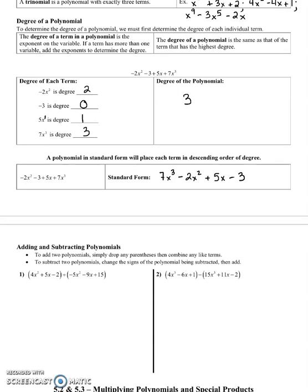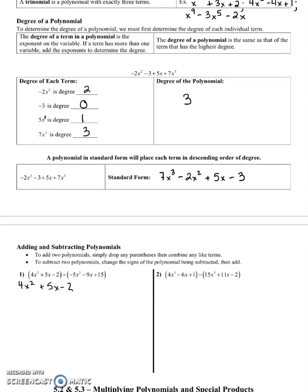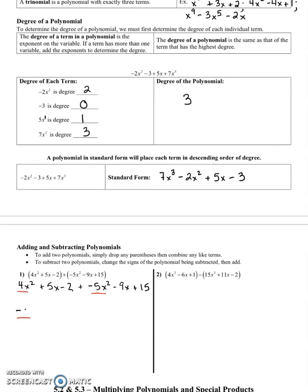If we add polynomials, we just drop any parentheses and then combine like terms. To subtract two polynomials, we have to distribute the negative sign through the polynomial being subtracted. On number 1, they're being added, so we can just drop the parentheses: 4x squared plus 5x minus 2 plus negative 5x squared minus 9x plus 15. Combining like terms, we have 4x squared minus 5x squared, giving us negative x squared.